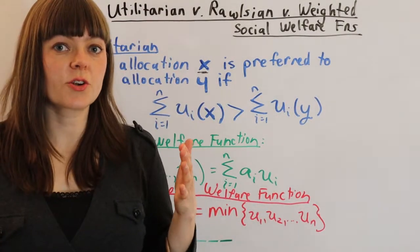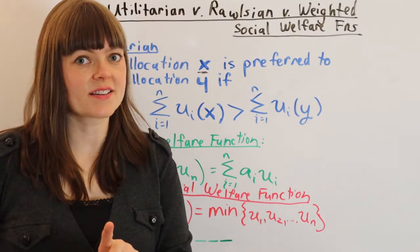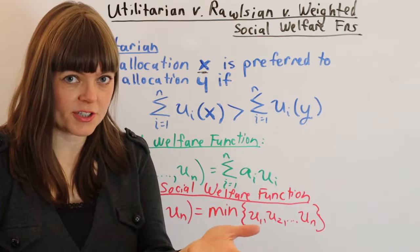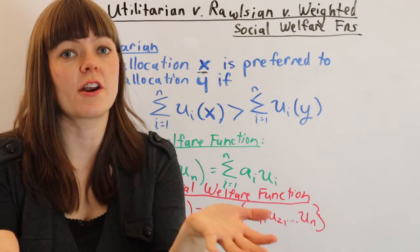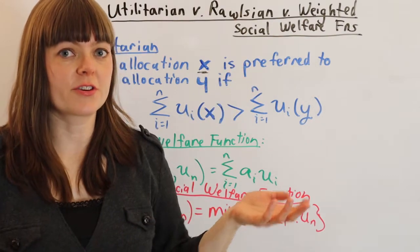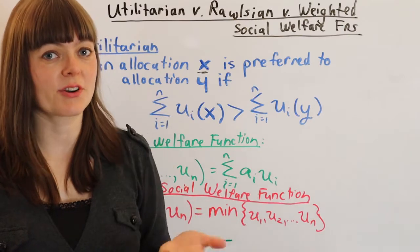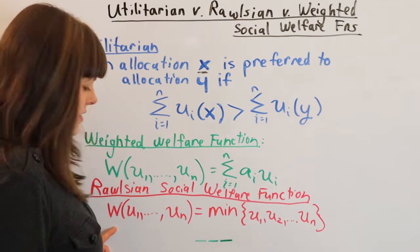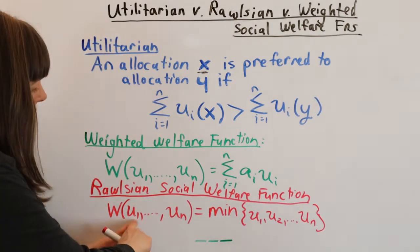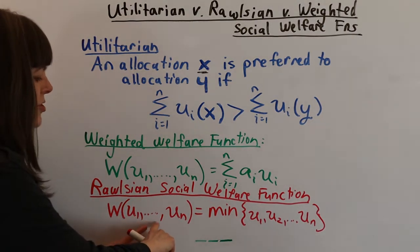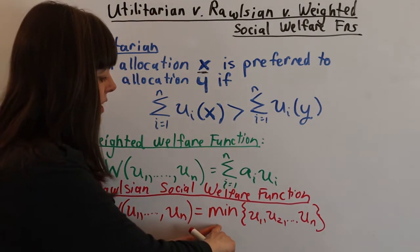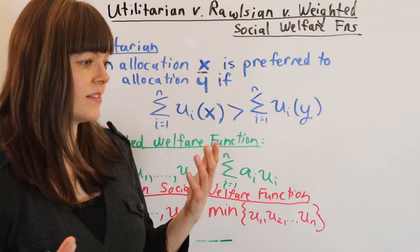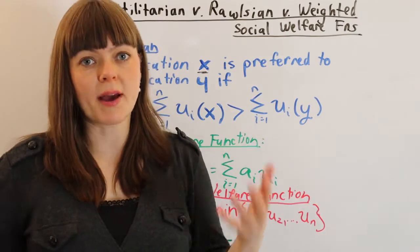The Rawlsian social welfare function only has one person's utility in it, and that's the person who's worst off, the person with the lowest utility. That's the person we care about. Really, Rawlsians are focused on bringing up the bottom so that there's nobody falling through the cracks, nobody experiencing anything bad. Social welfare in a Rawlsian situation is simply which person among the group has the lowest utility, and whoever that is, that's going to be the utility of the group.